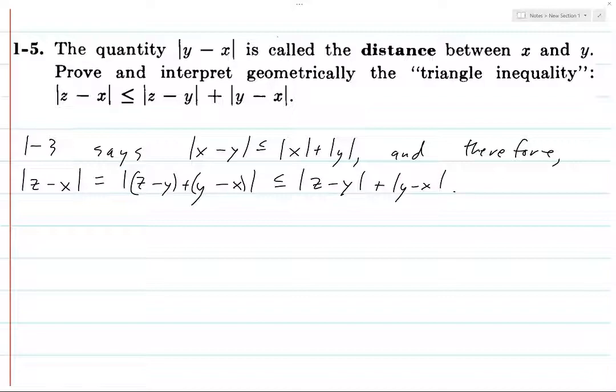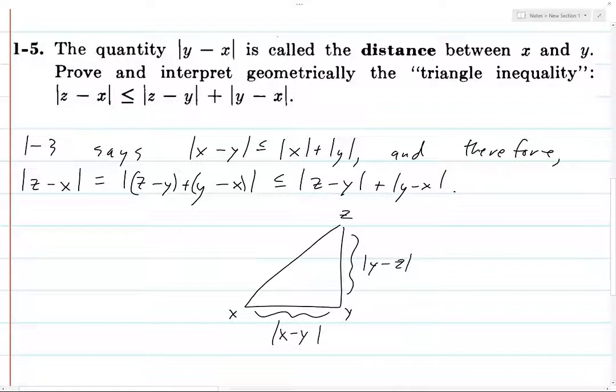And why do we call it the triangle inequality? Well, if you draw a triangle and you consider these as separate points x, y, and z, then this distance here would be |x - y|, this distance here is |y - z|, and this distance here is |x - z|. So what the triangle inequality is saying is that the distance between x and z is less than or equal to the distance between x and y plus the distance between y and z.